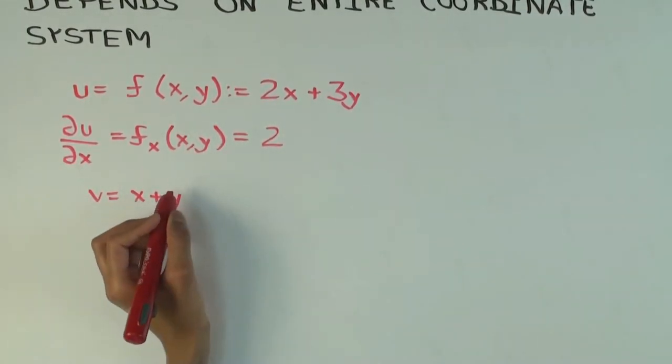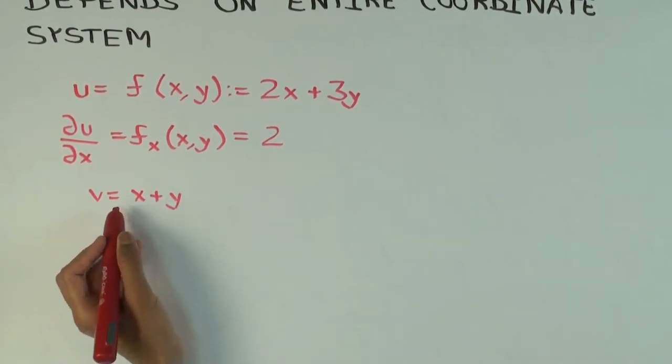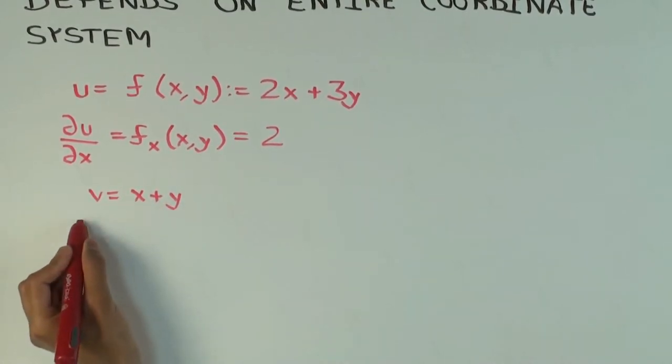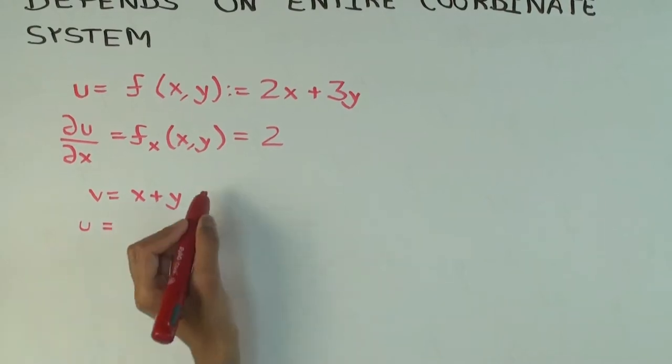Now I'm going to consider this function in a slightly different way. So I'm going to take v as x plus y, right here. So I'm going to write u in terms of v, or rather in terms of x and v. So I want to stop thinking about y, I want to think u in terms of x and v.